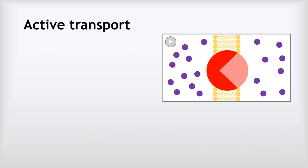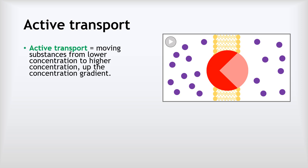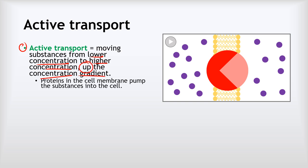The last thing to look at is active transport. In the examples of diffusion and osmosis, we've seen substances moving from high to low concentration without requiring any energy. Active transport is the opposite — substances move from lower concentration to higher concentration, up the concentration gradient. This is performed by proteins in the cell membrane that pump the substances into the cells, and this requires energy. That's why we call it active — the active part of active transport refers to the energy being used.